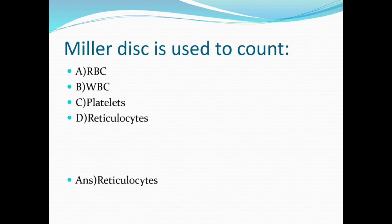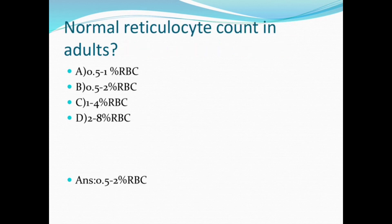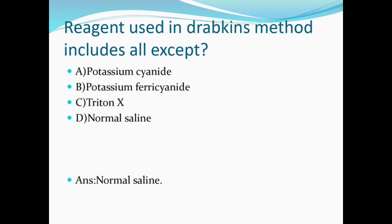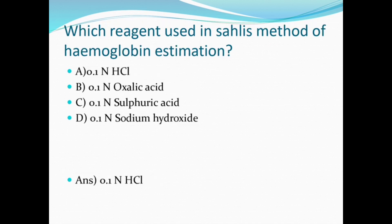Elevated reticulocyte count is seen in hemolytic anemia. The Miller disc is used to count reticulocytes. Normal reticulocyte count in adults is 0.5 to 2 percent. HRBC and ICSS recommended method for estimating hemoglobin is the cyanmethemoglobin method.